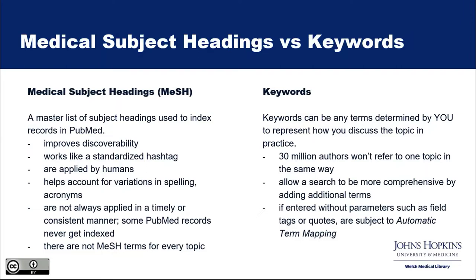MeSH terms can help you account for ambiguity — for example, there are separate terms for urinary retention and staff retention. They also account for spelling variations, like British English spellings of 'behaviour' or 'tumour.' However, if you search only with MeSH terms, you're likely to miss the most recent literature, literature out of scope of Medline, or literature that was never indexed.